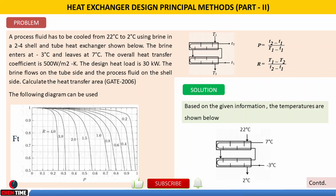In this configuration, the temperatures T1, T2, t1, and t2 are labeled, and we need to identify all four. The process fluid (hot fluid) enters at 22°C, so T1 = 22°C, and it leaves at 2°C, so T2 = 2°C. The cold fluid, brine, enters at −3°C so t1 = −3°C, and it leaves at t2 = 7°C.